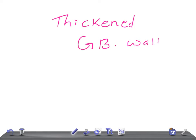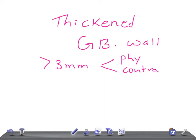Remember, if it's more than three millimeters then we call it a thickened gallbladder wall. But remember, we have to exclude the physiological contracted or empty gallbladder first. Those are two things you have to rule out before making a definitive diagnosis.